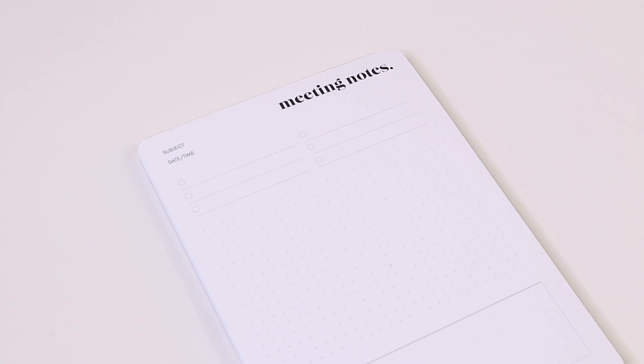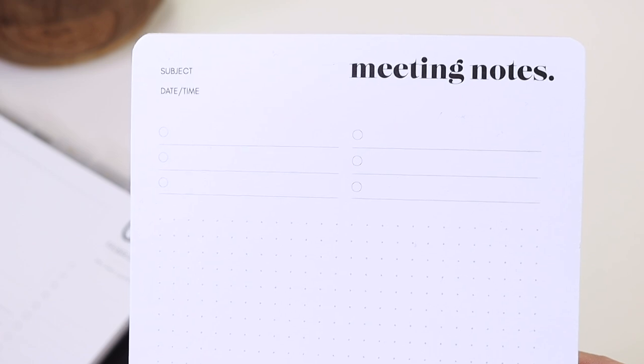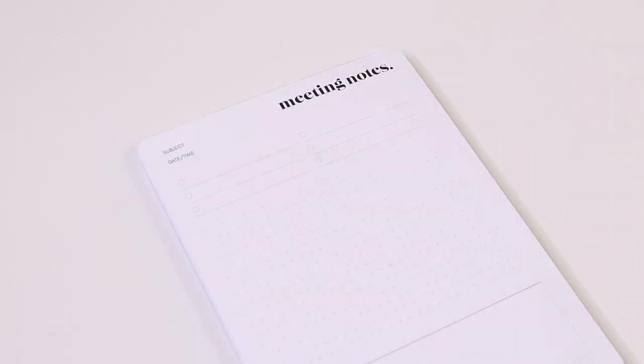And finally, one thing that everyone here at Cloth and Paper really likes to use are the meeting notes notepads. So up at the top, you can list your subject line, the date, and the time, and then there's six lines up at the top. These can be used for a number of different things.